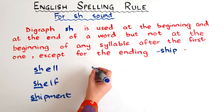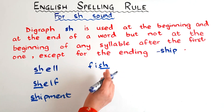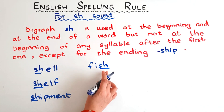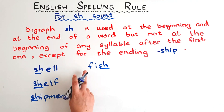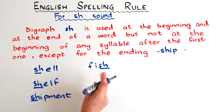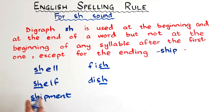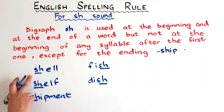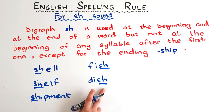If you hear the SH sound at the end of a word or at the end of a syllable — it's a single-syllable word and SH is at the end — you can also write it with SH, as in 'fish' or 'dish.' At the beginning of a first syllable or at the end of a syllable, you can write the SH sound with the digraph SH.